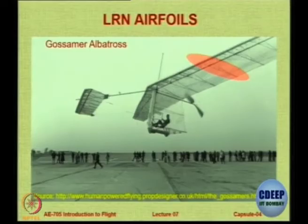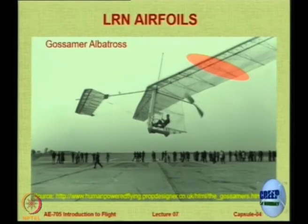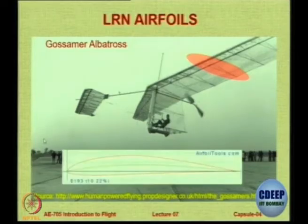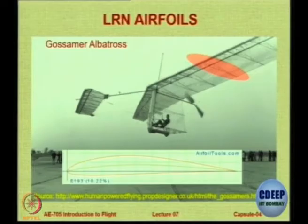Obviously this will not be a high speed aircraft; it is a very low speed aircraft. The aerofoil used for the wing of this aircraft must also be suitable for low Reynolds number flight. The Gossamer Albatross uses 10 percent thick Eppler 193 aerofoils. Such an aerofoil is used for low Reynolds number flow.